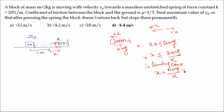The maximum value of x in the limiting case is x = μmg/k. Substituting μ = 1/5, m = 2 kg, g = 10, k = 10: x = (1/5 × 2 × 10)/10 = 2/5 = 0.4 meter. So the block compresses the spring by 0.4 m.